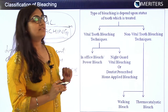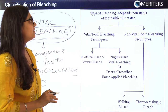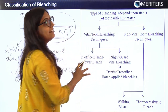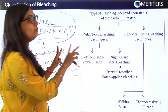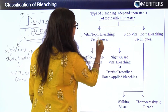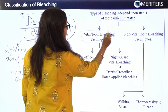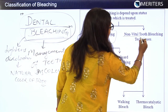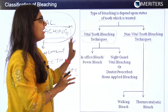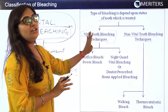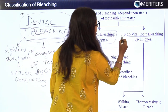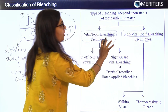Bleaching of the tooth can be classified based on the vitality of the tooth. There are basically two types: vital tooth bleaching techniques and non-vital tooth bleaching techniques. When bleaching a vital tooth it is called vital tooth bleaching technique, and when bleaching a non-vital tooth it is known as non-vital tooth bleaching technique.